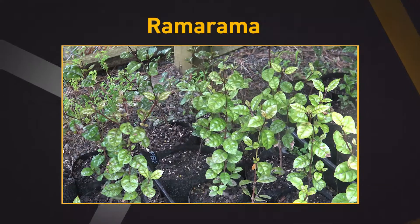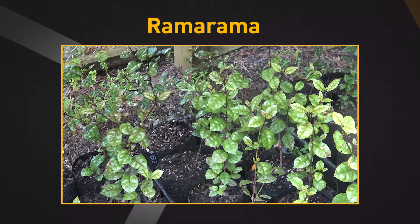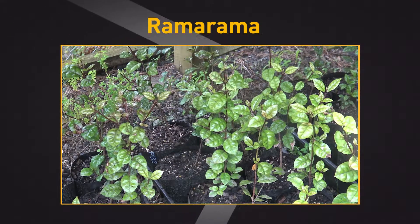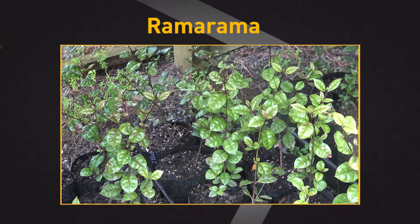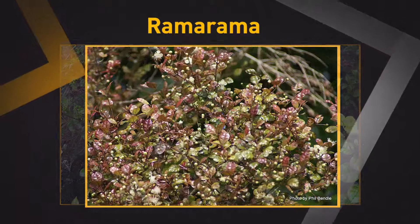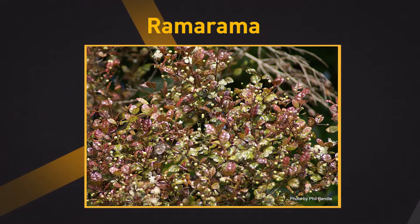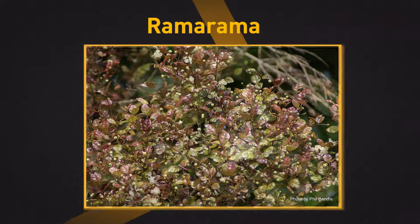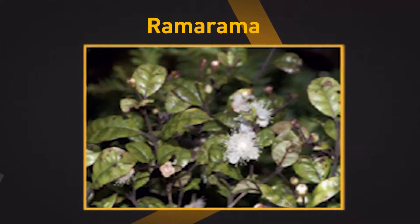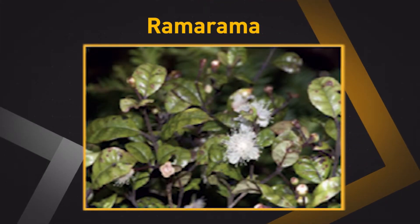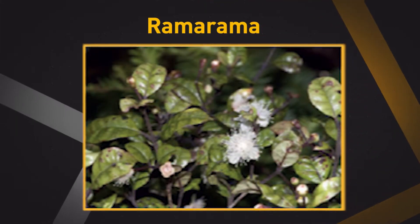In this section we're going to look at examples of myrtle rust. For example, this is a healthy Rama Rama. Rama Rama grows as a brownish or reddish green bushy shrub or small tree. The leaves are paired and rounded ovals that are much paler underneath with fuzzy new growth. Its flowers are white and fruit can be red to black on a long stalk.